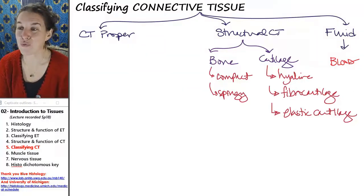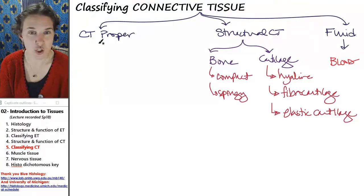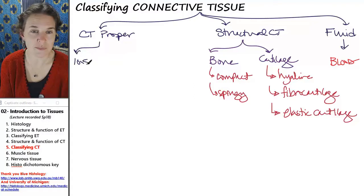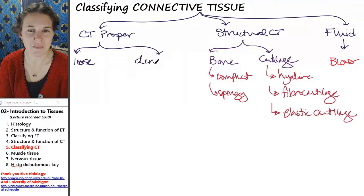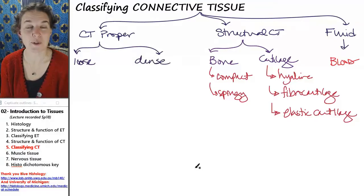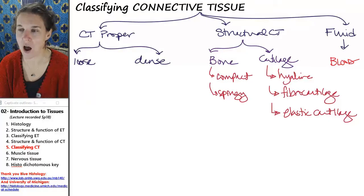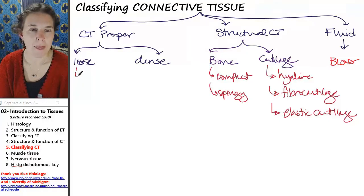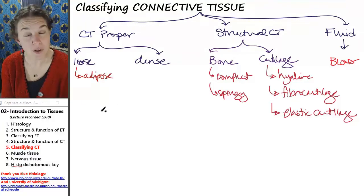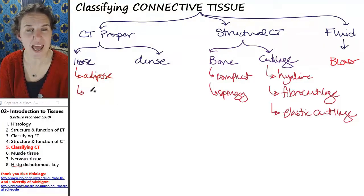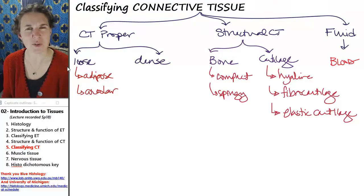Connective tissue proper has two main flavors. You have loose connective tissue proper, and you have dense connective tissue proper. And loose connective tissue, adipose is an example of loose connective tissue, and areolar connective tissue is an example of loose connective tissue.